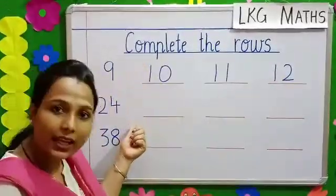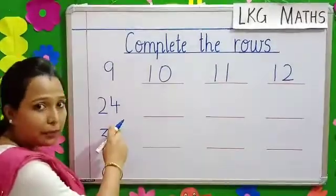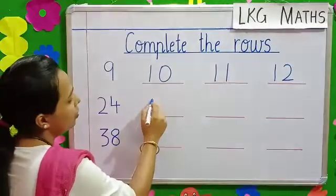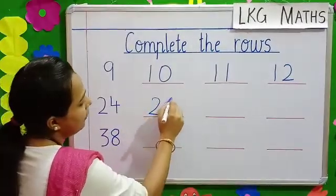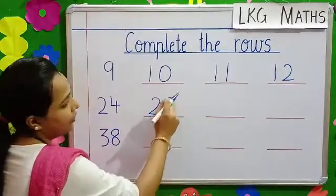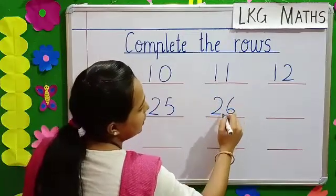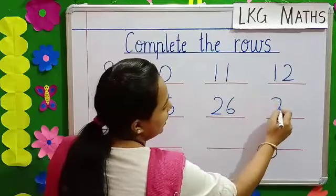So, you come down to the next number. The next number is 24. After 24, 25. Then, we write 26. After 26, 27.